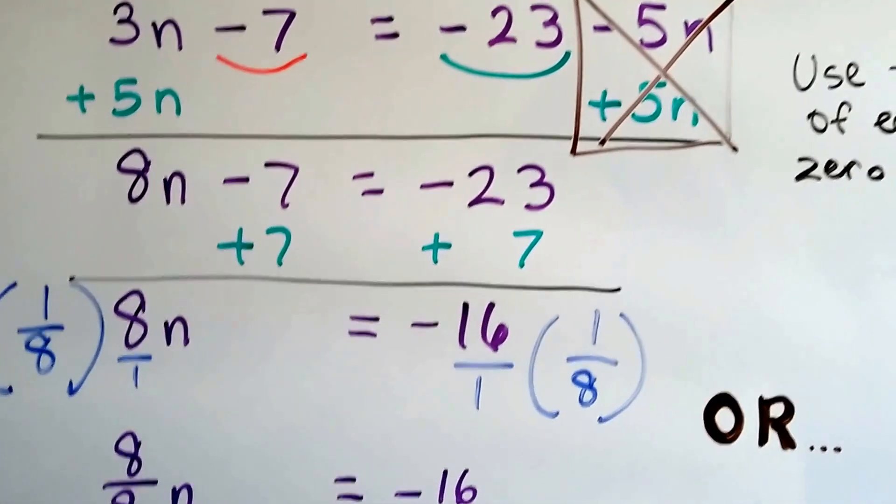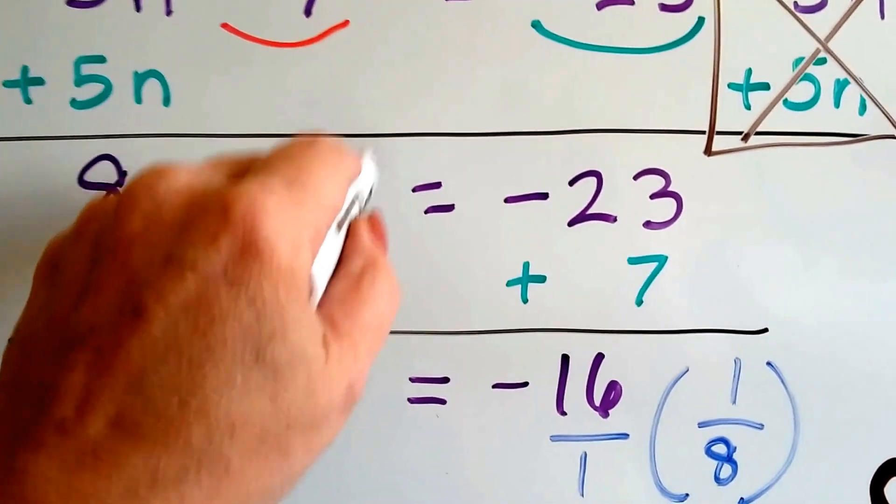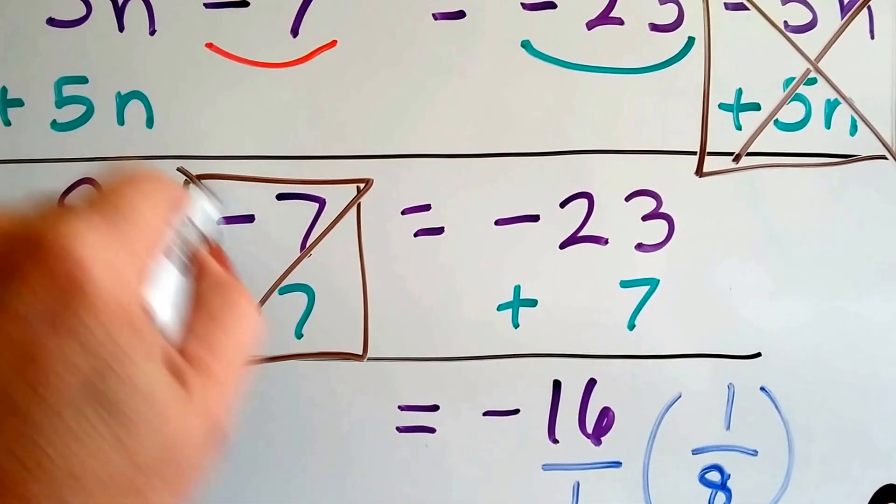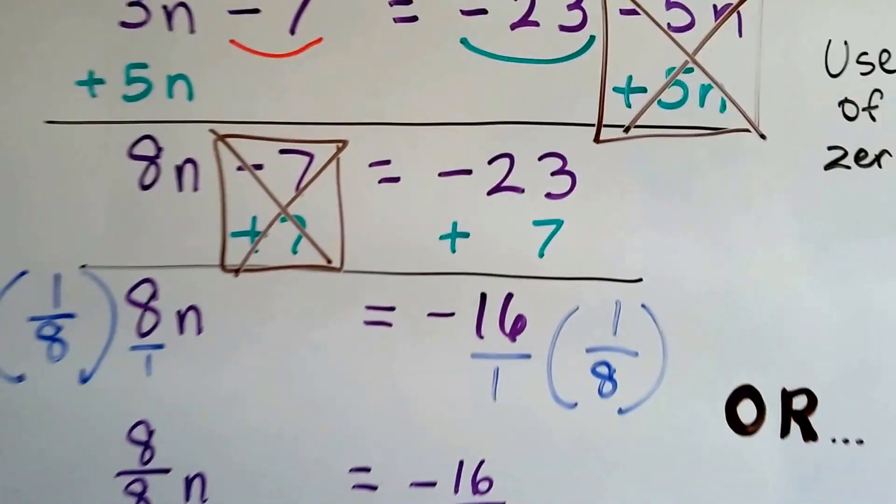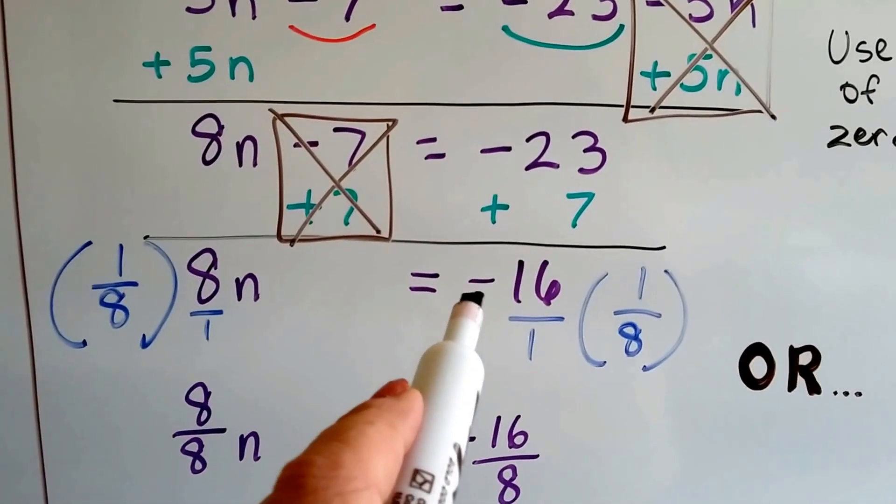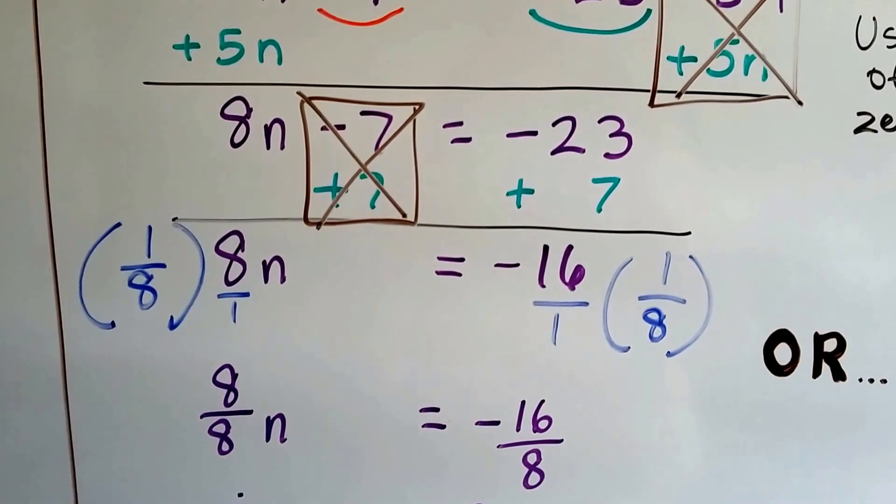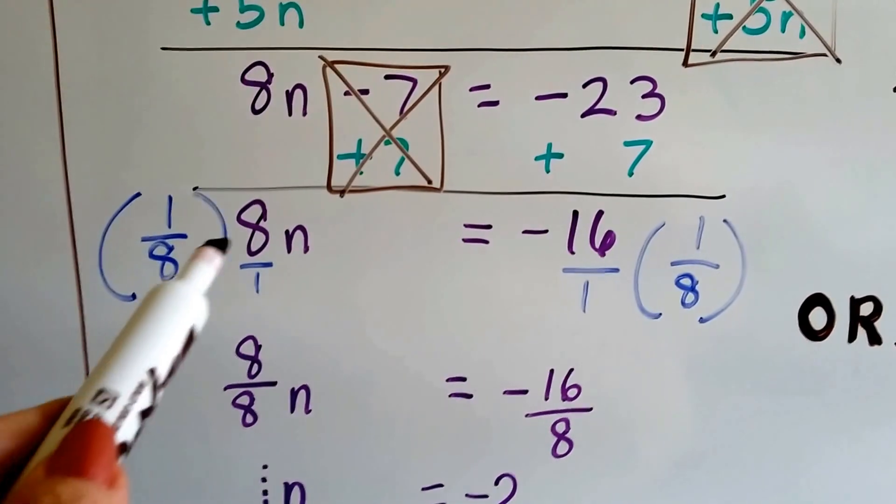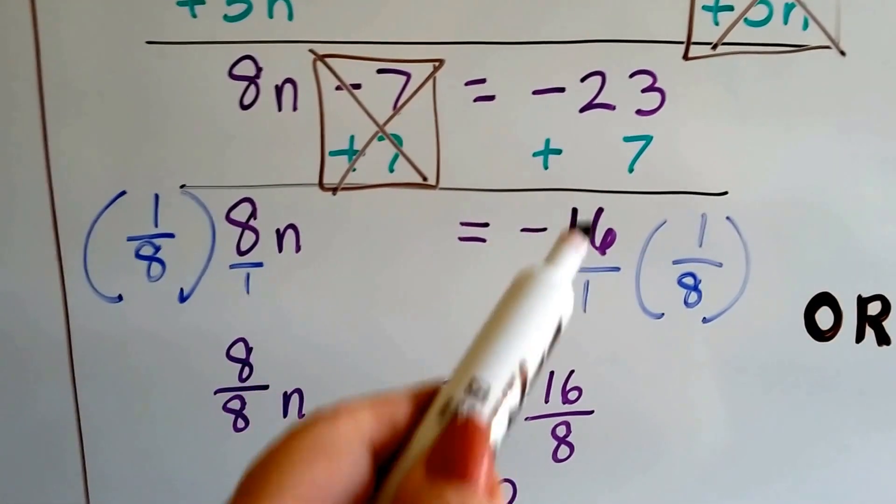Now let's get rid of that 7 by adding a 7. Because it's a negative 7, we'll add a 7, and it'll create a zero pair and get rid of it. Now we've got to add a 7 to this side. Negative 23 plus 7 is a negative 16. It brought it back closer up towards the zero when we added that 7. Now we've got 8n equals negative 16.